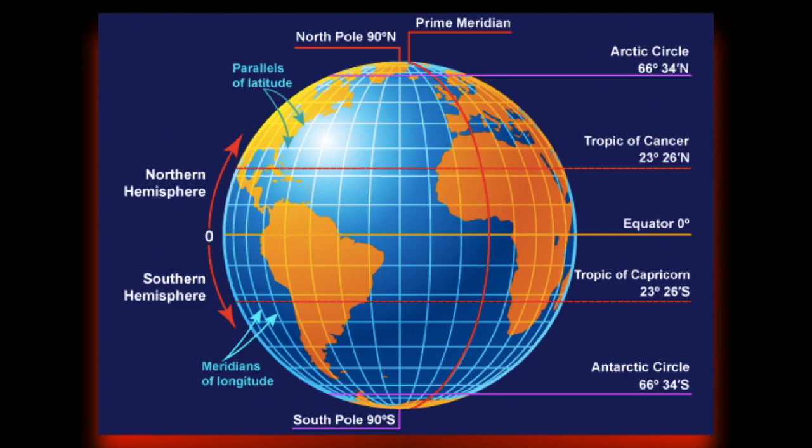The surface of earth is vast enough that it was difficult to locate any point without the utilization of mathematical method. For this purpose, fictional lines are drawn on the earth globe known as latitudes and longitudes. Both these are imaginary lines which are used to locate a point on the globe and measured in degrees. Latitudes are horizontal imaginary lines whereas the longitudes are vertical imaginary lines.